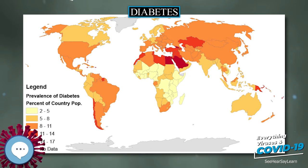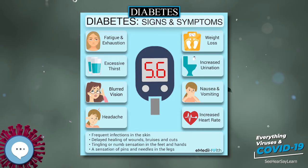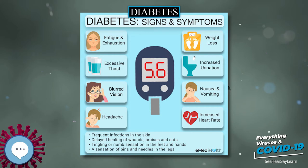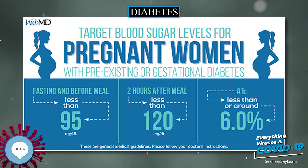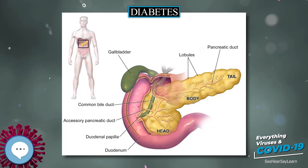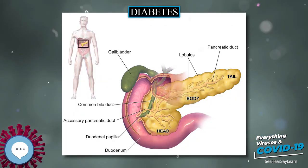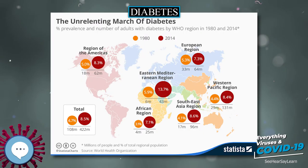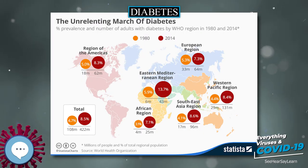A rare but equally severe possibility is hyperosmolar hyperglycemic state (HHS), which is more common in type 2 diabetes and is mainly the result of dehydration. Treatment-related low blood sugar (hypoglycemia) is common in people with type 1 and also type 2 diabetes depending on the medication being used.